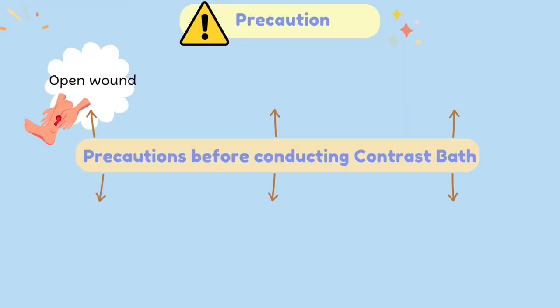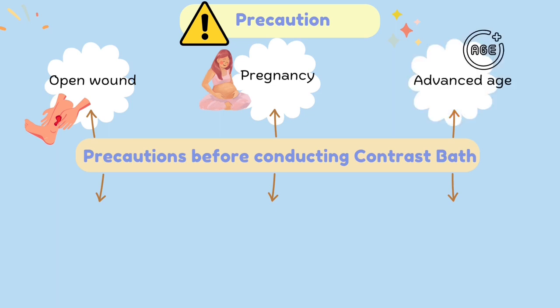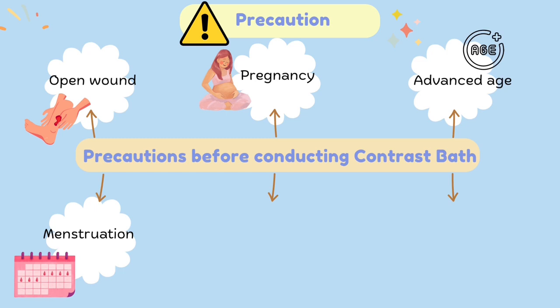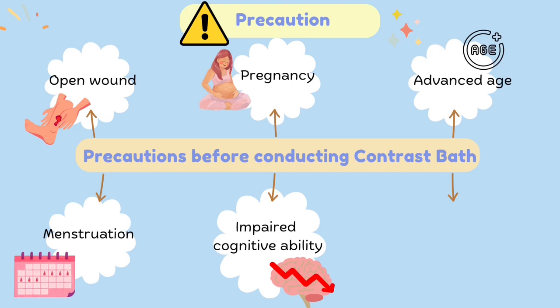Moving on to the precautions before conducting contrast bath. The first one is open wound — open wounds are sensitive to heat and cold, hence they may not be able to withstand the application of contrast bath. Next is pregnancy — contrast bath should not be applied over a pregnant uterus as it may increase circulation to the fetus. Advanced age — if the patient has fragile skin, they may be unable to adjust to the higher temperatures caused by the heat. Menstruation — heat applied to the lower back or over the pelvis may increase menstrual flow, so heat application might be contraindicated depending on the signs and symptoms. This leads to impaired cognitive ability.